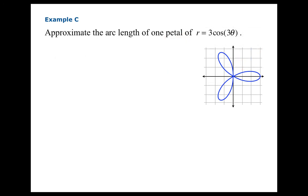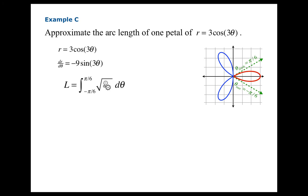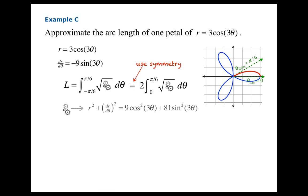For the last example, we're going to approximate the arc length of one petal of r equals 3 cosine 3θ. We need dR/dθ — plug that in. We want the arc length of that one petal, and we could use theta from −π/6 to π/6. It's often wise to use symmetry to simplify calculations, so in this case we'll take half the petal and double it.